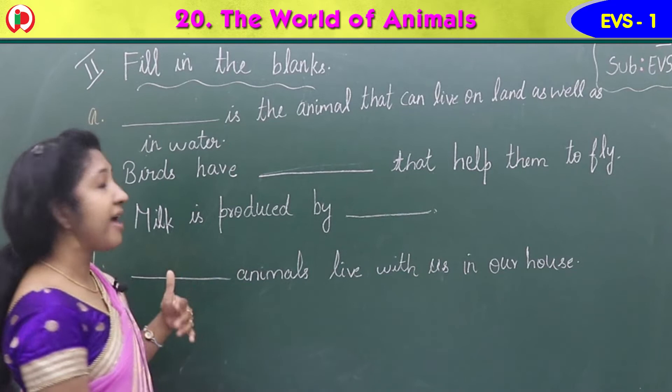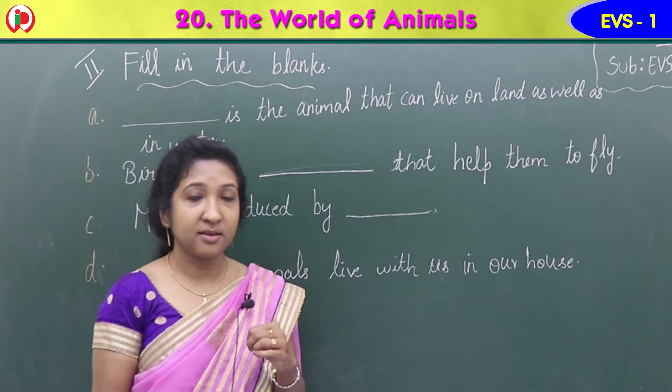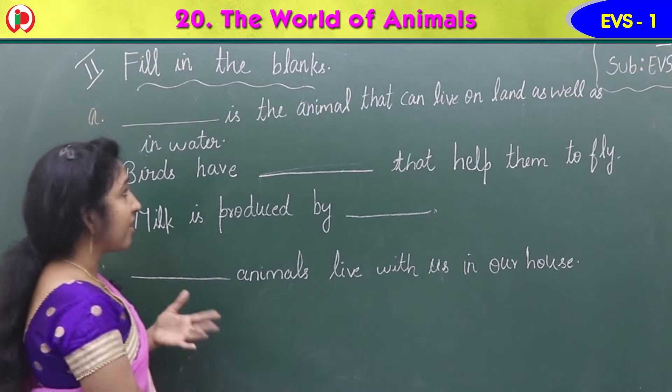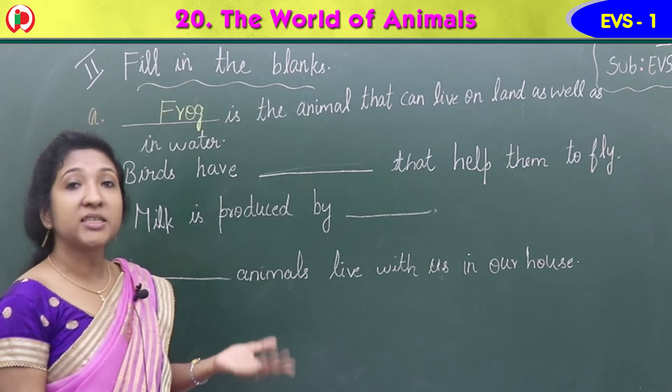Which animal lives on land and also in water? We learned about animals that live on land as well as in water — they are frog, tortoise, crocodile. Any one name you can write here. We can write frog, F-R-O-G. Frog is the animal that can live on land as well as in water.